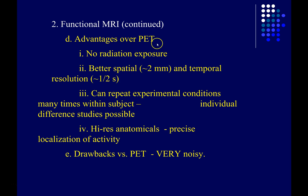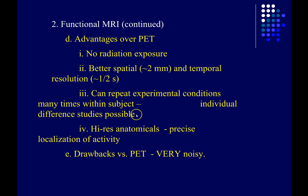Let's compare functional MRI with PET. fMRI has serious advantages: there's no radiation, so you can do it as many times as you want with very little risk. It has better spatial resolution — down to about a millimeter or two — and much better temporal resolution — down to about half a second. You can repeat conditions many times within a subject, enabling individual difference studies. And in addition to functional data, you can also collect high-resolution anatomical images from the same subjects and overlay statistical maps onto them.